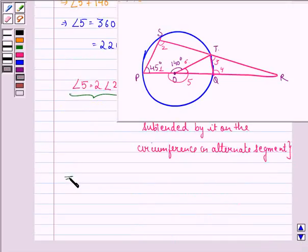The measure of angle 5 is 220 degrees. So 220 degrees is twice angle 2, which implies angle 2 equals 220 divided by 2, that is 110 degrees.